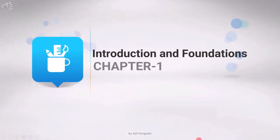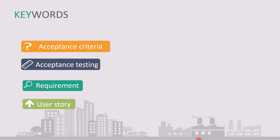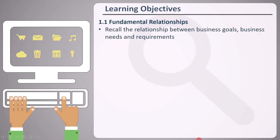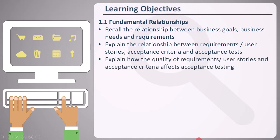Hello and welcome to Chapter 1: Introduction and Foundations. At the end of this lecture, note these keywords: acceptance criteria, acceptance testing, requirement, and user story. The first main learning objective is fundamental relationships, where we will recall the relationship between business goals, business needs, and requirements, and explain the relationship between requirements or user stories, acceptance criteria, and acceptance tests.